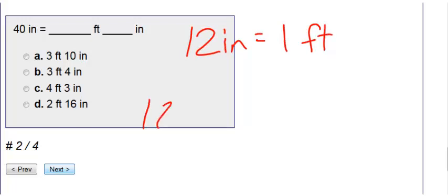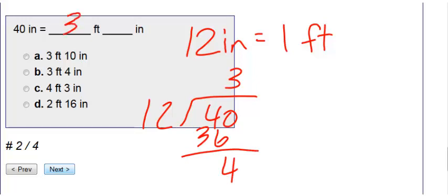Therefore I'm going to take 12 and divide it into 40. 3 times 12 is 36 and I have 4 remainder. So my answer is going to be 3 feet. I have 4 left over, therefore it's 4 inches, which is choice B.